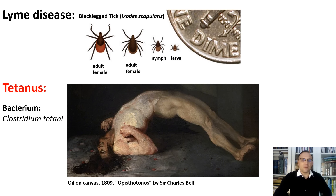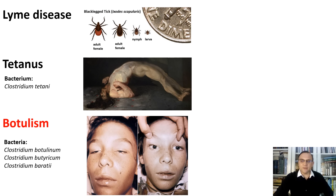Another example is tetanus. Tetanus is acquired through infection of a cut or wound with the spores of the bacterium Clostridium tetani, but tetanus cannot be transmitted from person to person — so the disease is infectious but not contagious. Botulism is not contagious as well. Foodborne botulism is caused by eating or drinking something contaminated with a botulinum toxin, produced by the bacterium Clostridium botulinum. This toxin affects the nervous system and causes paralysis.